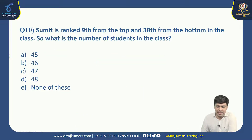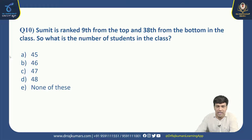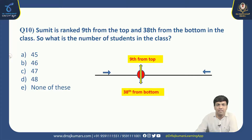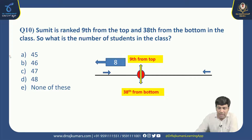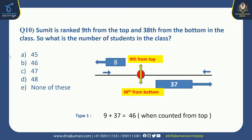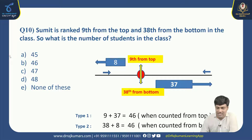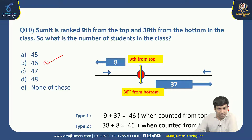Next: Sumit is ranked 9th from the top and 38th from the bottom in a class. What is the number of students? When counted from the top, there are 8 persons behind Sumit; from the bottom, 37 persons. We can solve in two ways: 9 plus 37 equals 46, or 38 plus 8 equals 46. In both cases the answer is 46. Right option is B, 46.